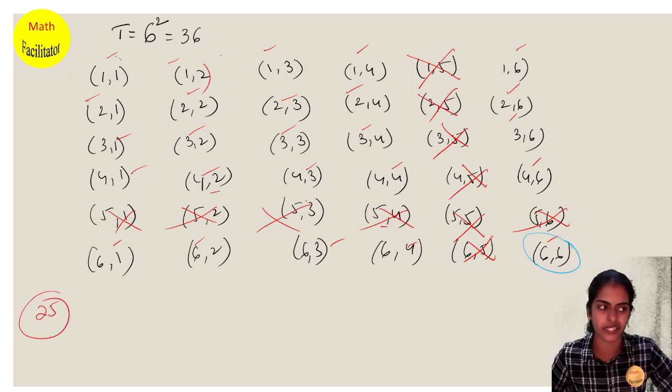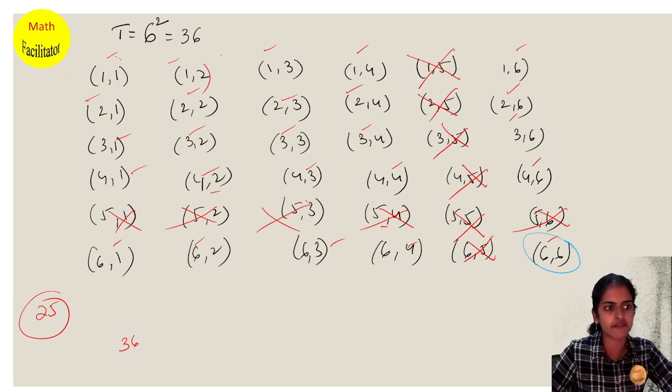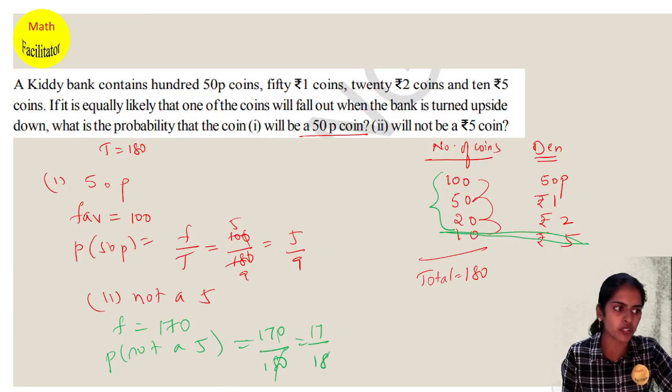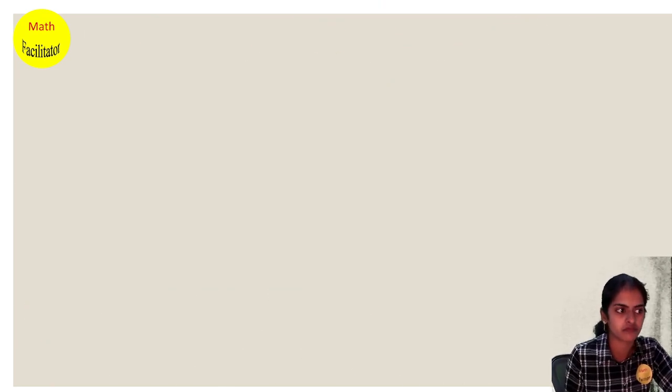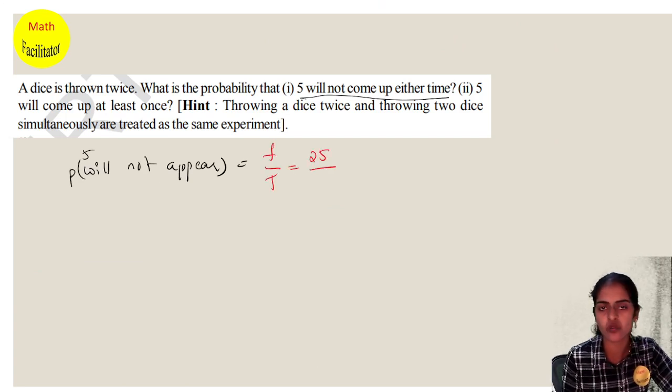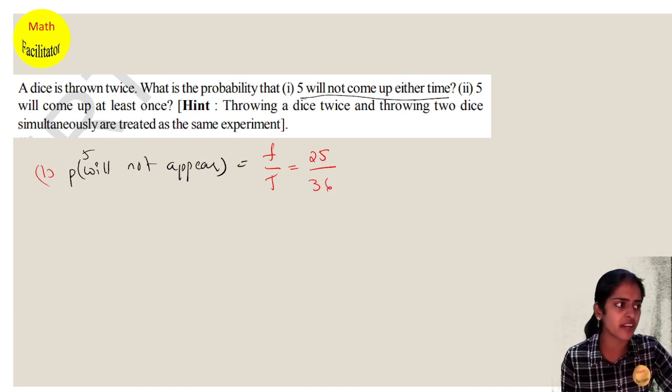You can also take 36 total outcomes and cancel 11 outcomes where five appears, giving you 25. So 25 outcomes have no five. The table I explained is very important. Your favorable outcomes by total: 25 by 36. Second part: five appears at least once.